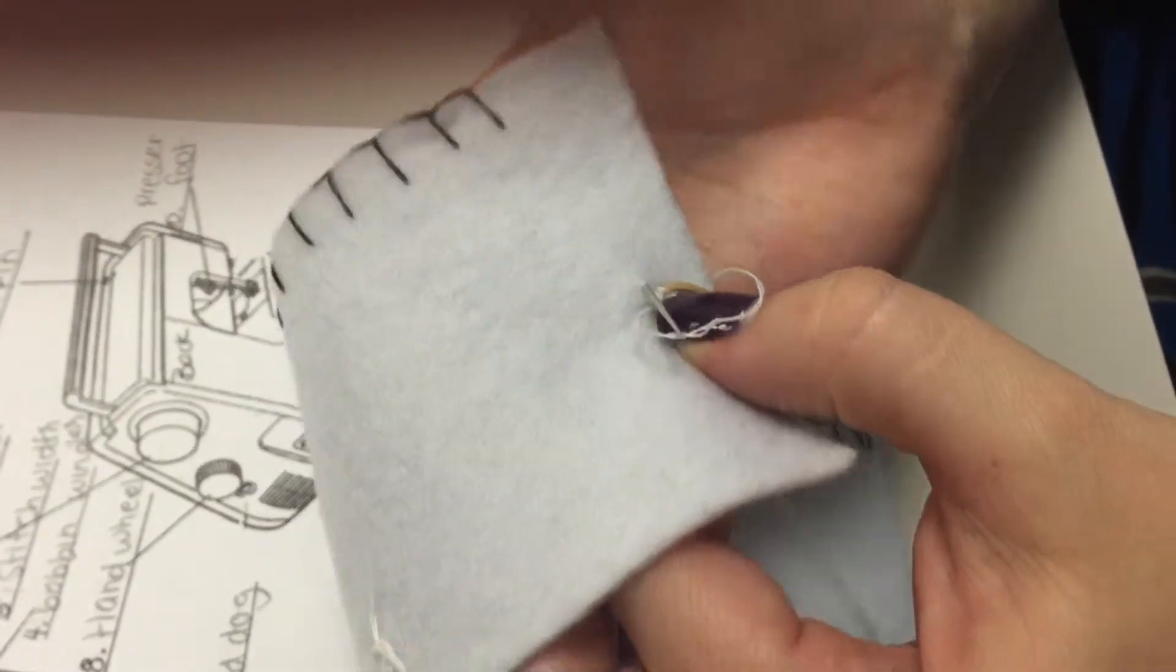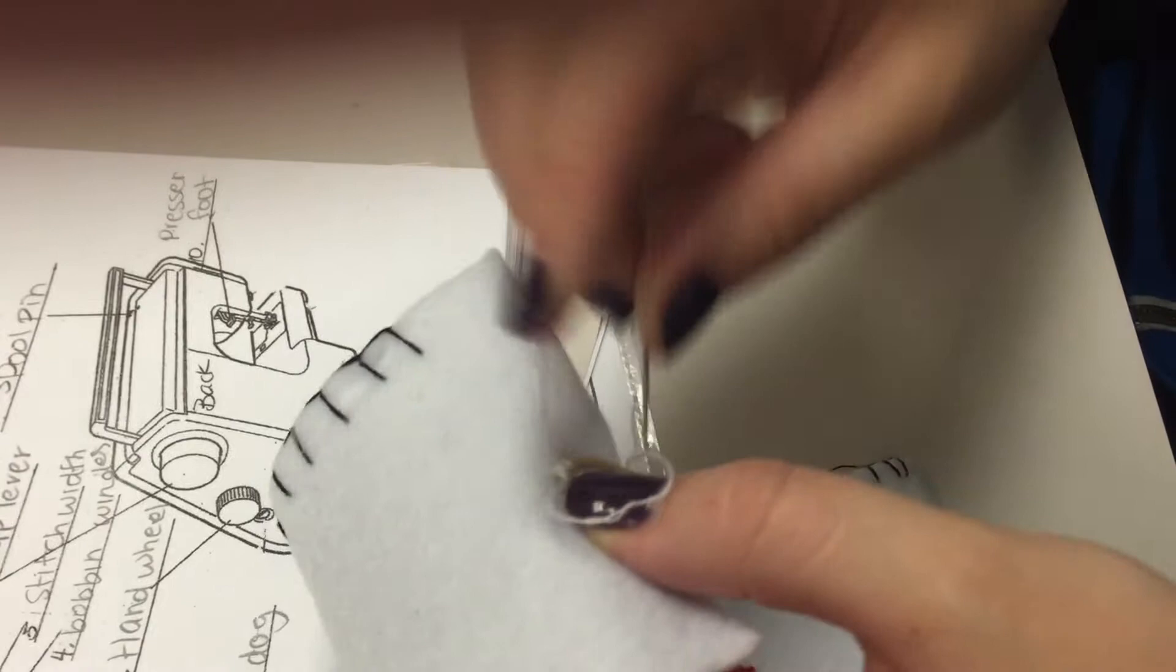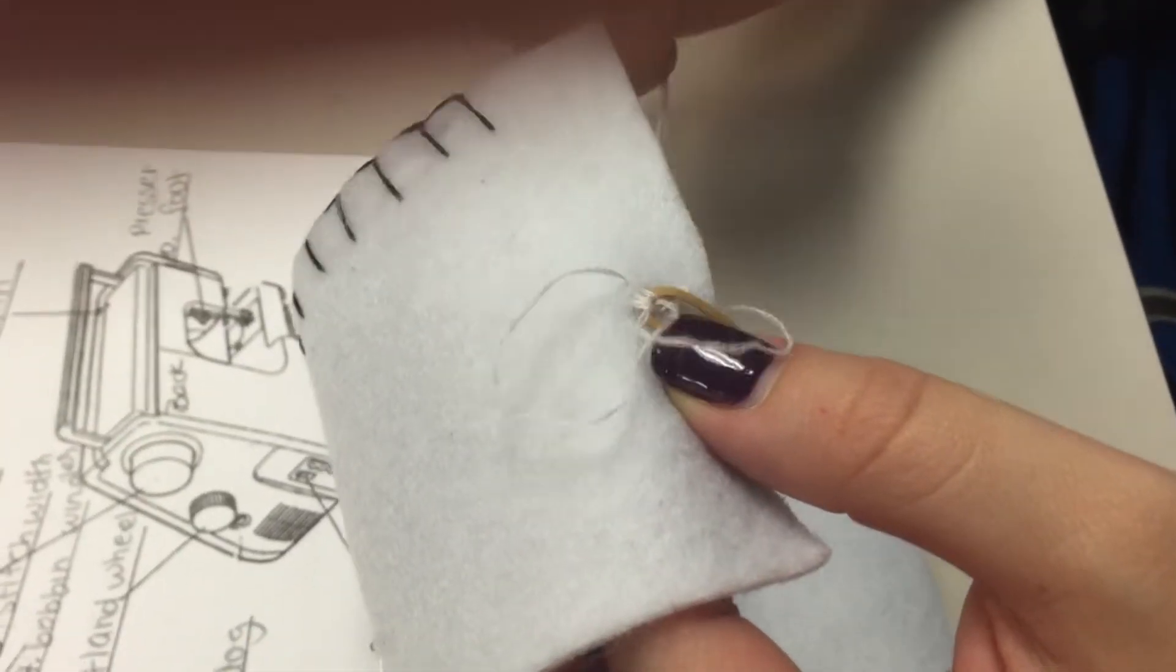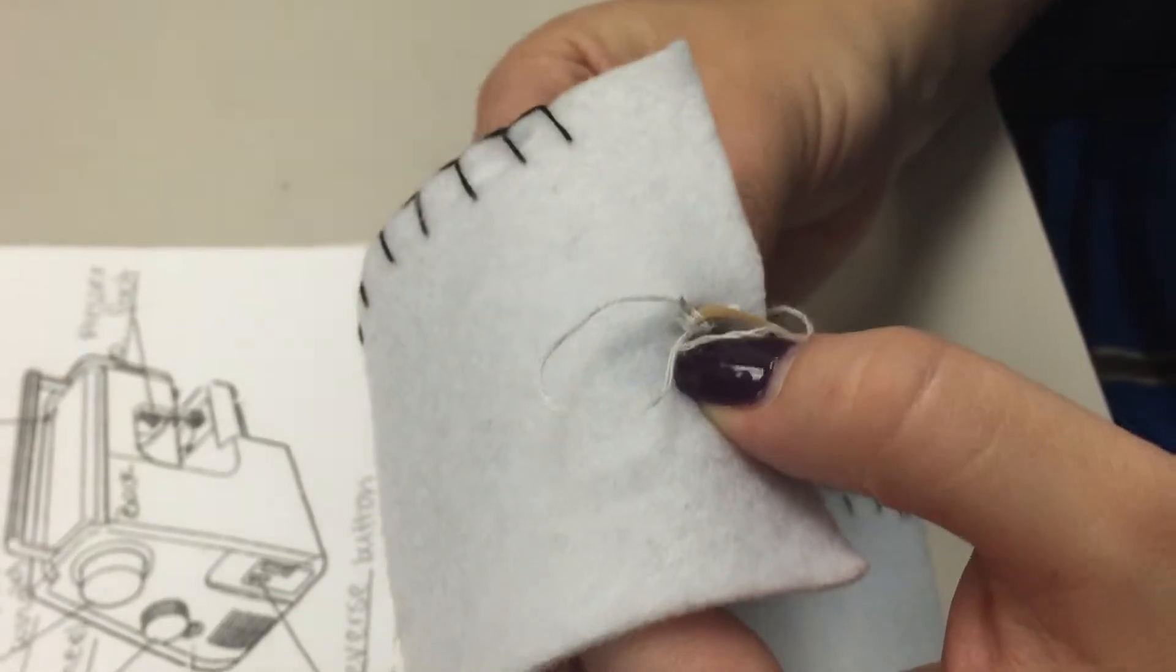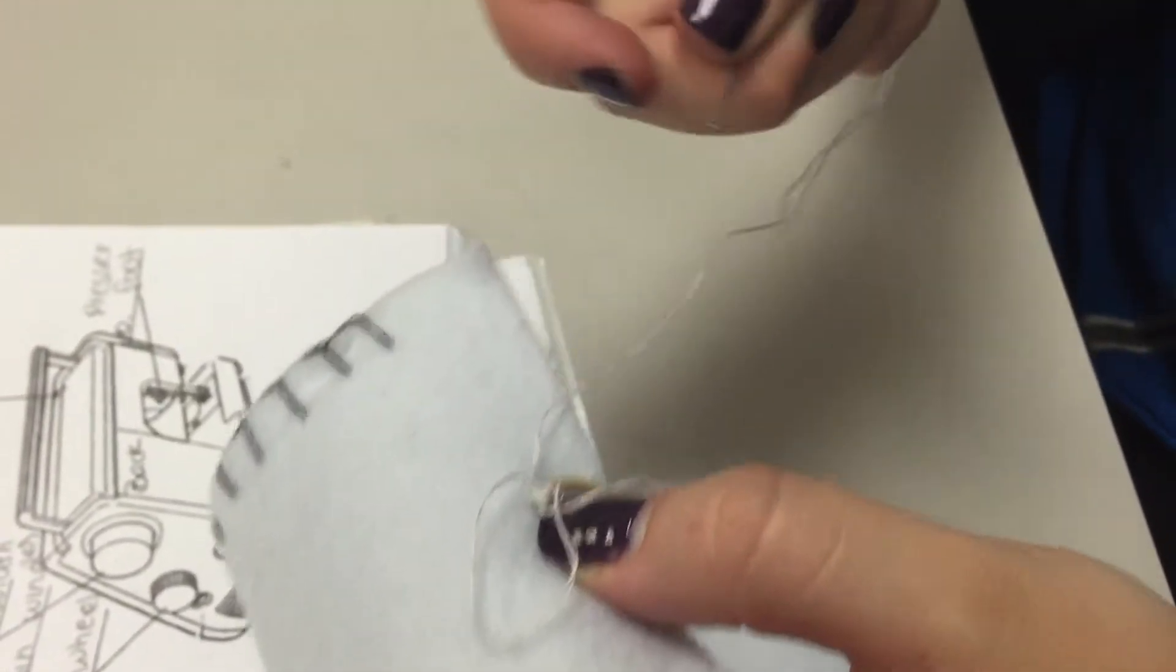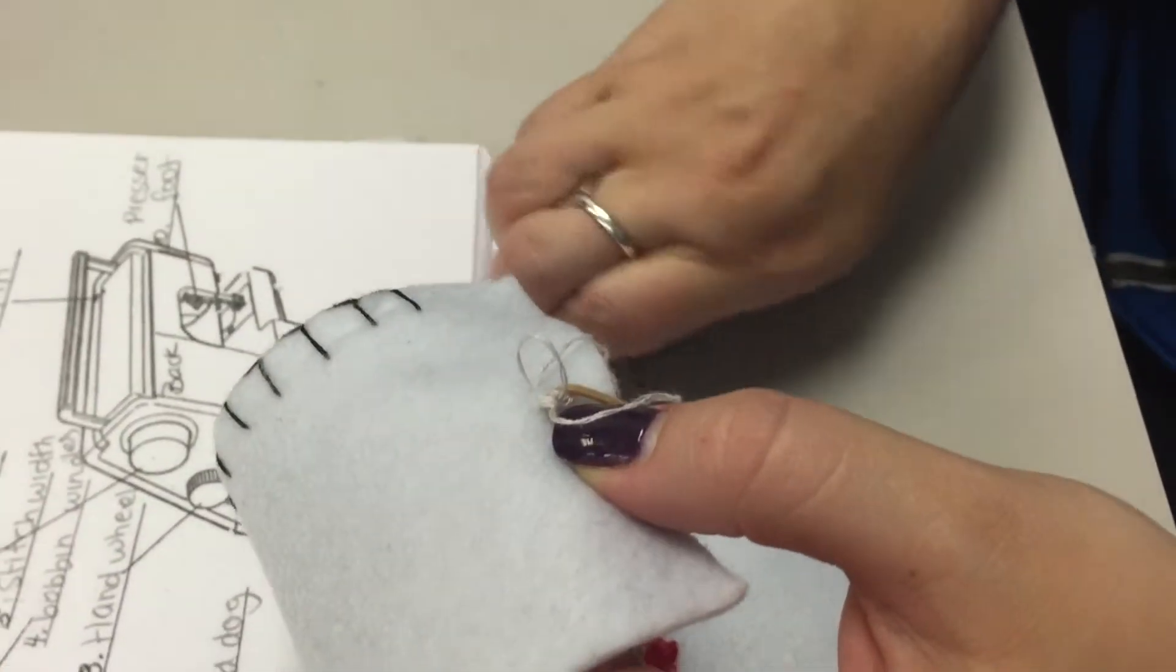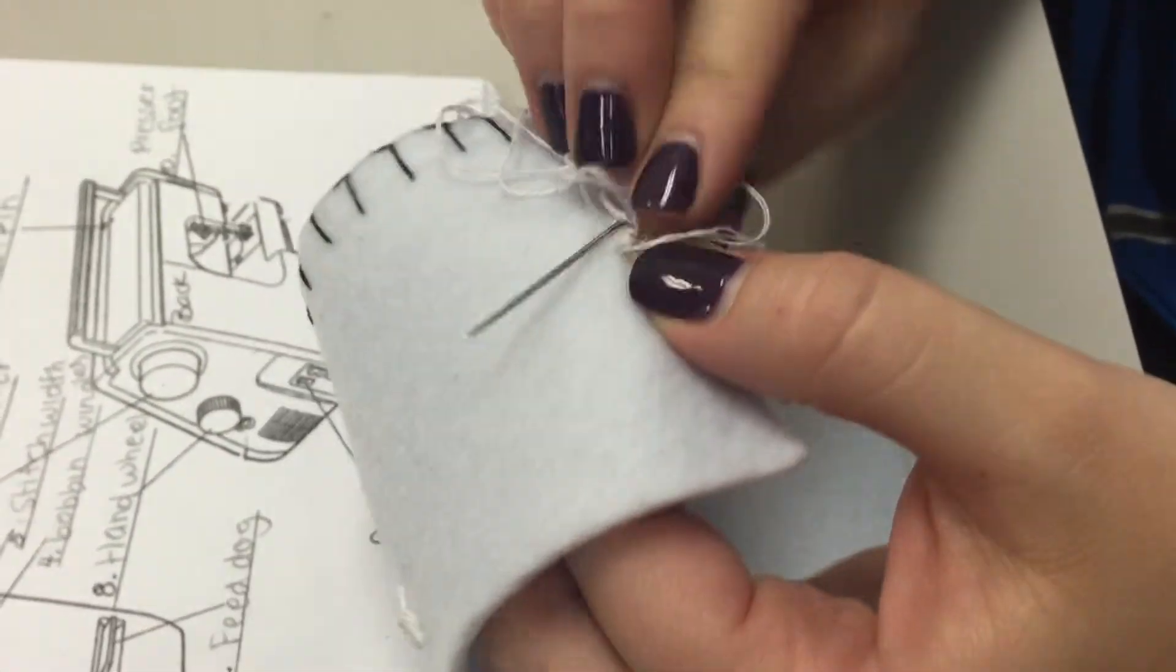When you're done, go one last time and then you're going to tie it. You can tie it on the front because you're going to have a patch over top of it, so that's fine. So remember, same as always, through the loop till it knots.